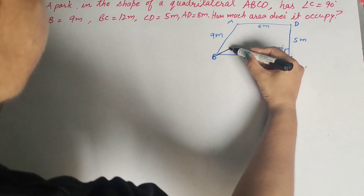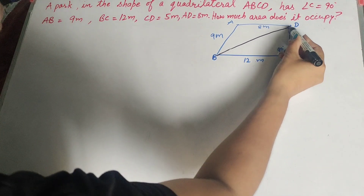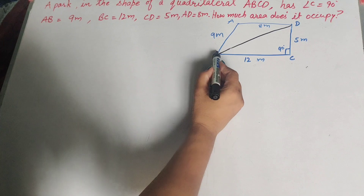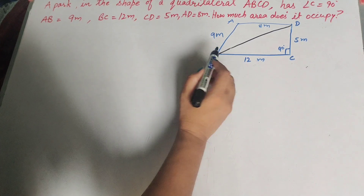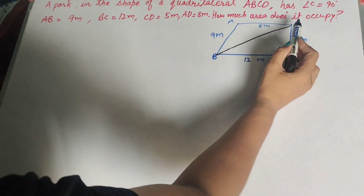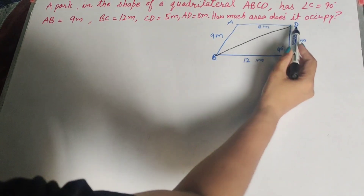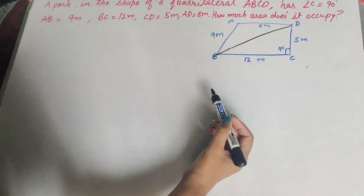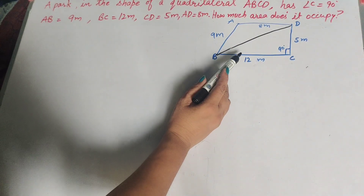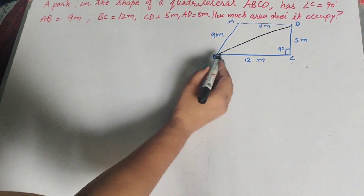To find the area of the quadrilateral, we draw the diagonal BD in quadrilateral ABCD. This divides the quadrilateral into two triangles: triangle ABD and triangle BCD.